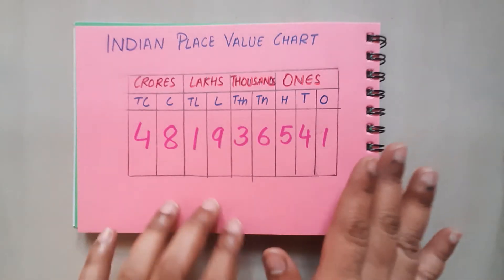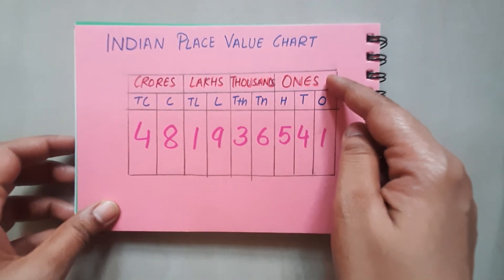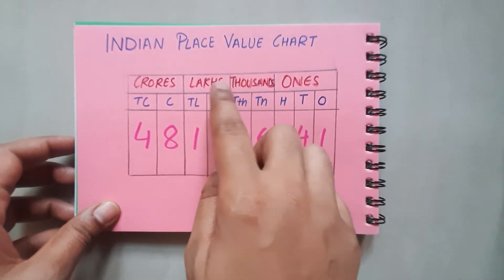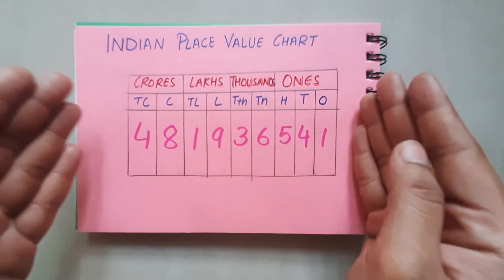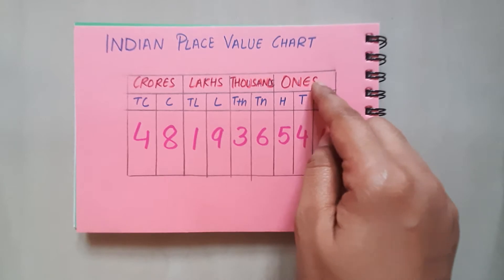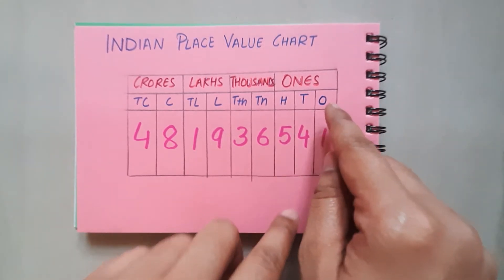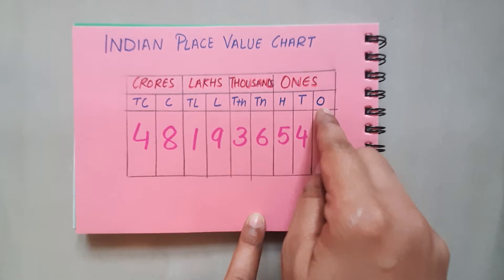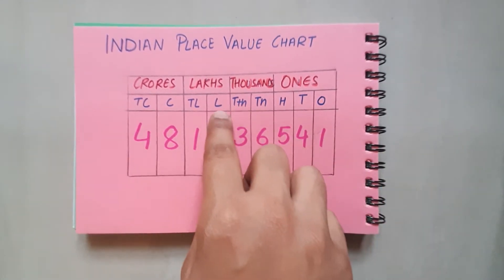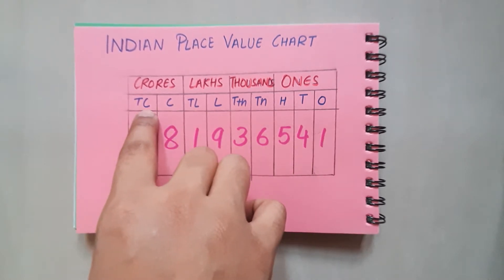This is the Indian place value chart. These are the periods written in an Indian place value chart. In each period we have these places. We have already learned about ones, tens, hundreds, thousands, ten thousands, lakhs, ten lakhs, crores, and ten crores.